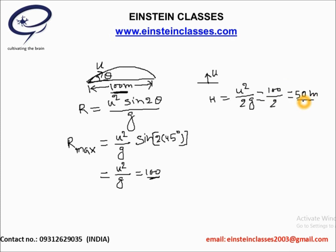This is the maximum height to which the cricketer can throw the same ball. One confusion that can arise is that we need to calculate the maximum height when the same cricketer throws the same ball with his complete strength, putting in the maximum speed u. That is the maximum height achieved by the ball.